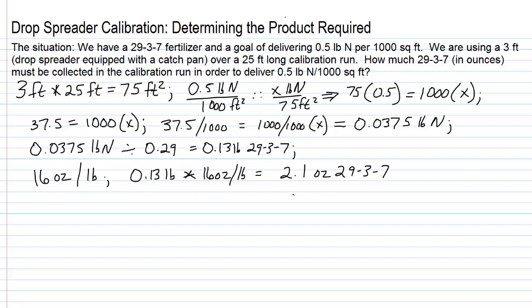So, our target with that drop spreader is to keep adjusting the setting on it until we collect over a 25-foot-long calibration run and a 3-foot-wide spreader. We collect 2.1 ounces of 29-3-7, and then we will be delivering a half pound of nitrogen per 1,000 square feet.